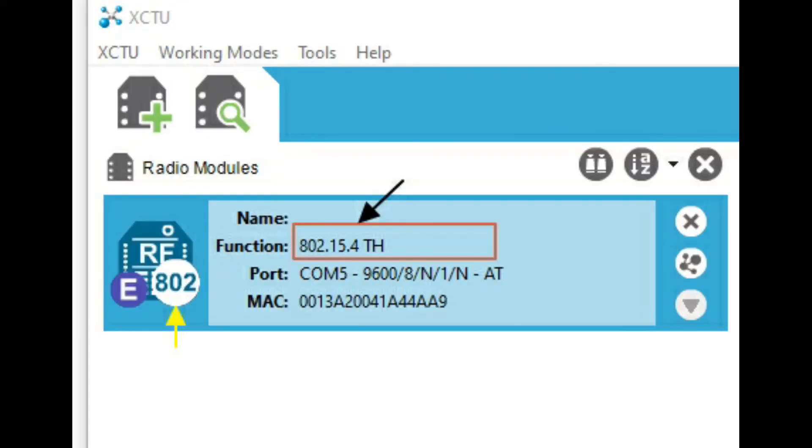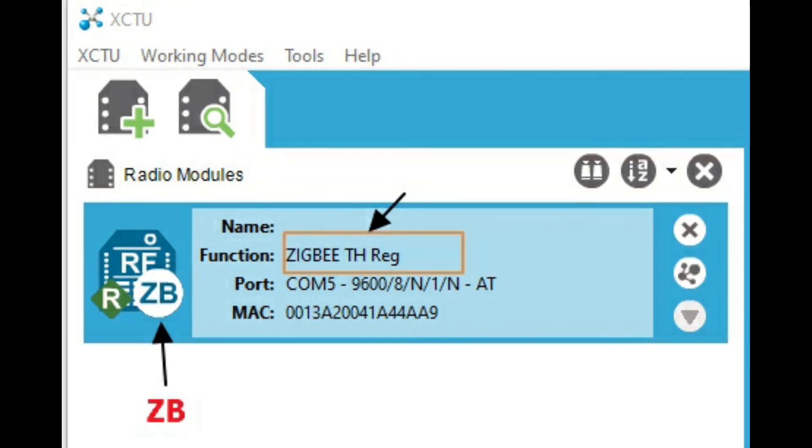If you program the module for 802.15.4, it will show as 802 and if you program the ZigBee firmware, it will display as ZB router or coordinator.